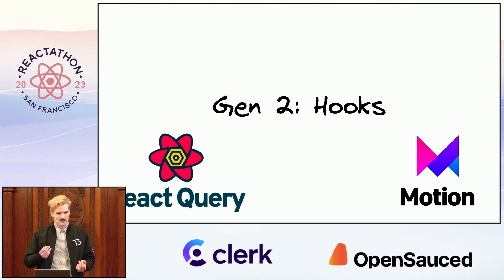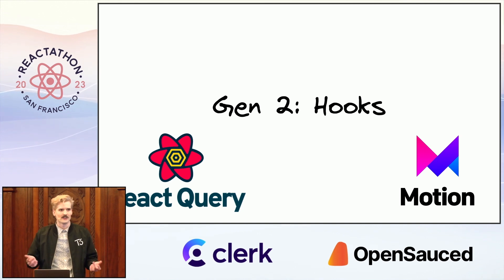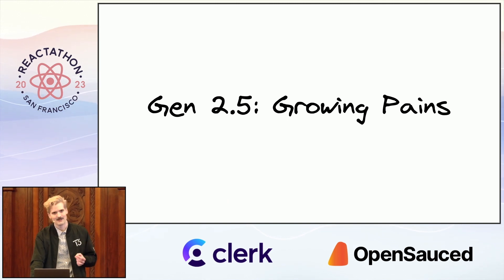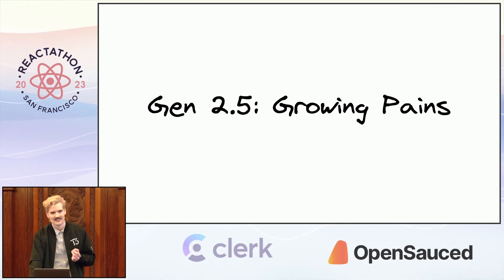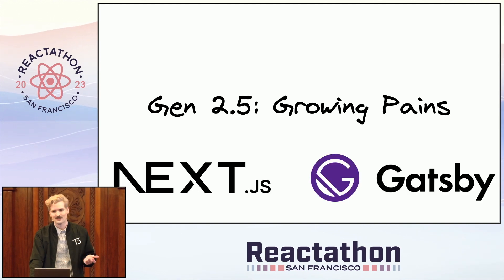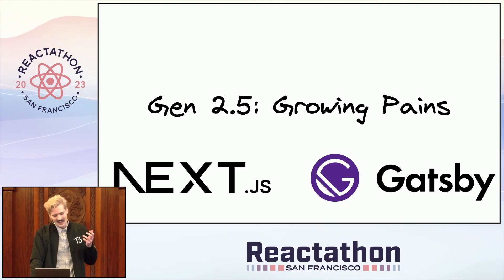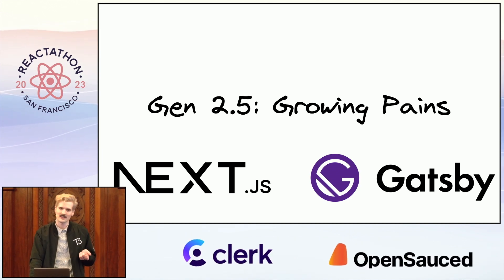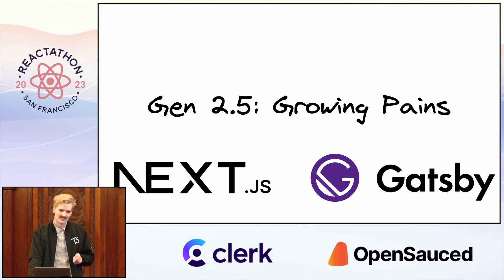But that doesn't mean all was solved. I'd make the argument that the big remaining growing pain was the server. And we've absolutely seen that in the past, present, and future. I'm going to make the argument that both Next.js and Gatsby were the growing pains here. And I'm even going to argue that Next was a little bit worse, because it looked like they were building good primitives.